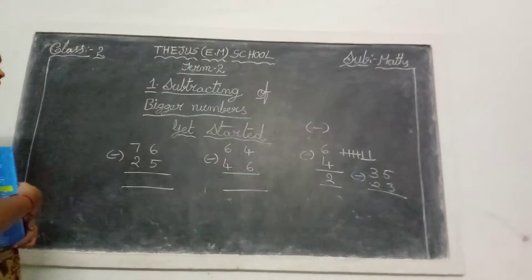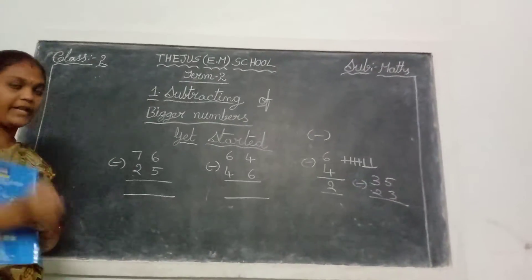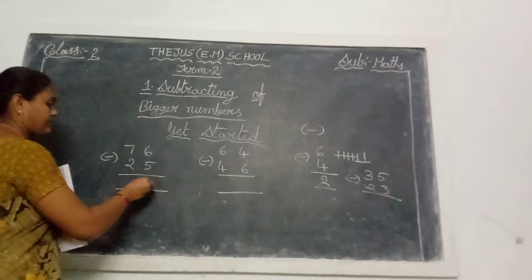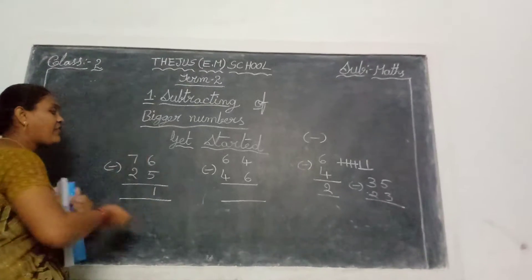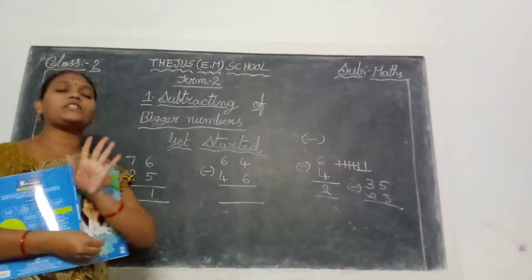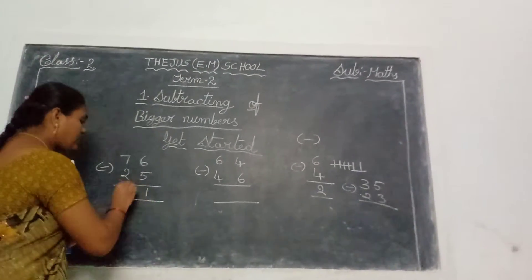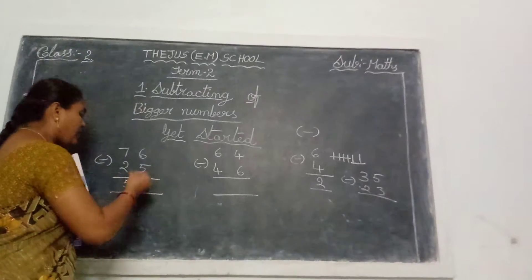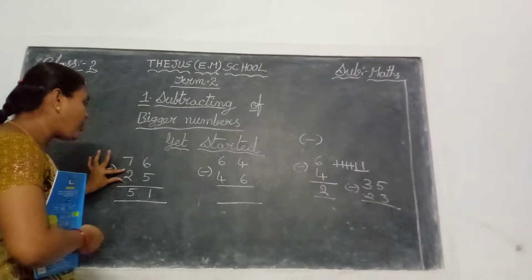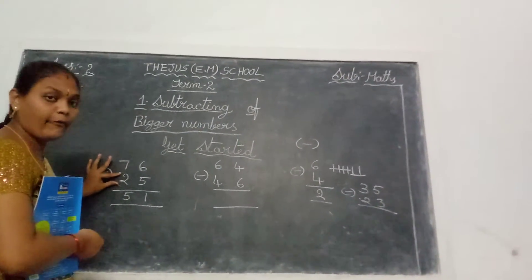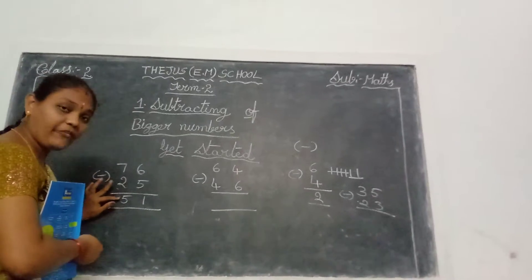So you do the subtraction. Take 6 fingers, close 5 fingers — remaining 1 finger. Take 7 fingers, close 2 fingers — remaining 5 fingers. So 51. Total 76 pages, she read only 25, so remaining pages are 51.